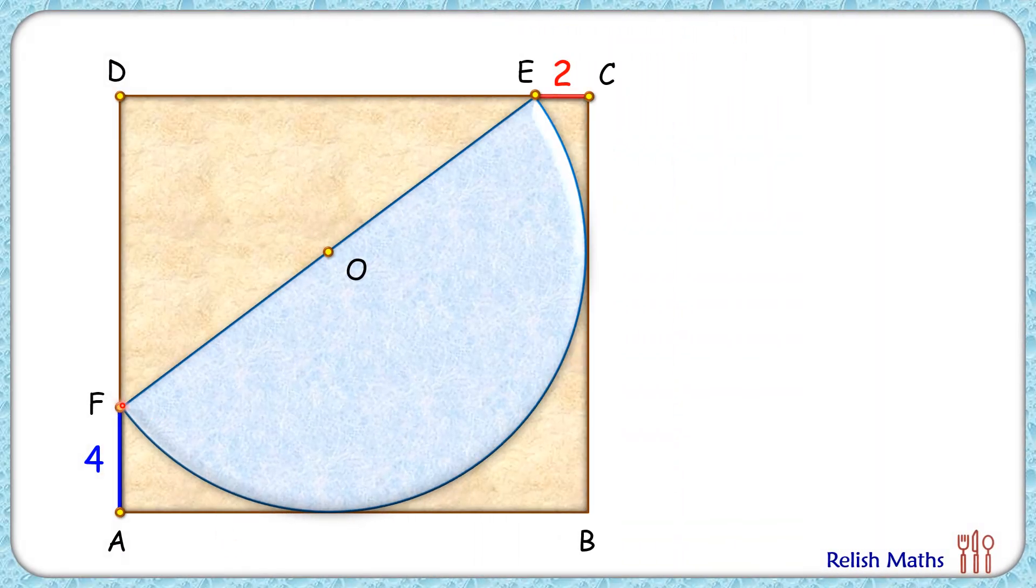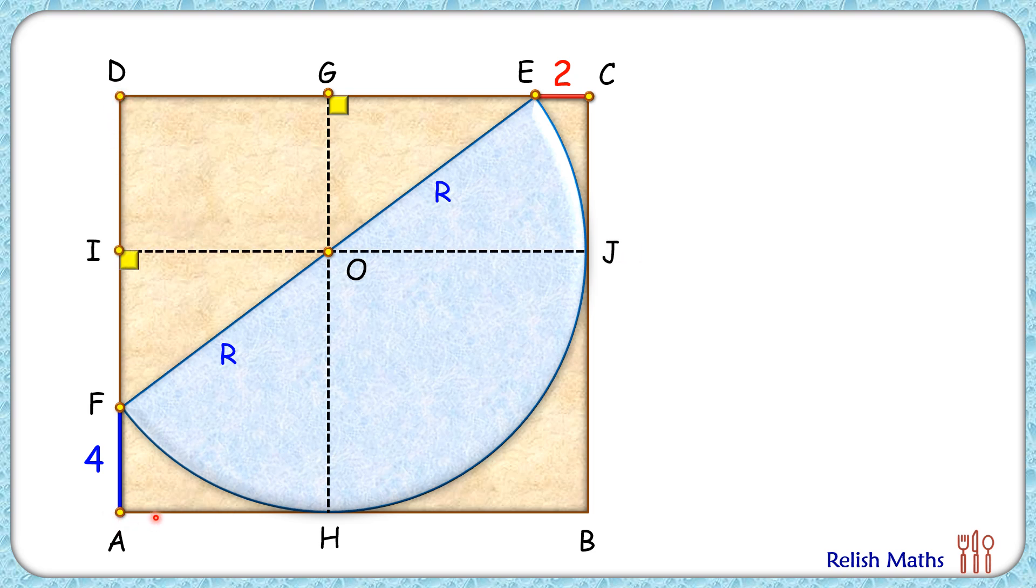Let's assume the radius of this semicircle is r cm. Now from point O, let's draw a vertical line which is parallel to AD and also let's draw a horizontal line which is parallel to side AB.